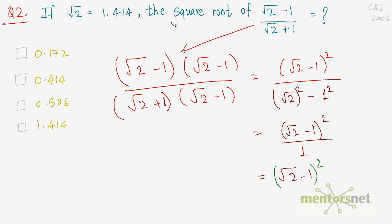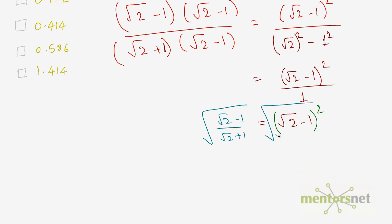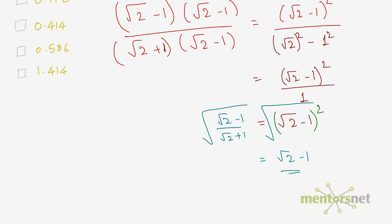But you haven't been asked for this value — you need the square root of it. Taking the square root of both sides, √((√2 - 1)²) = √2 - 1. Since √2 = 1.414, the answer is 1.414 - 1 = 0.414.